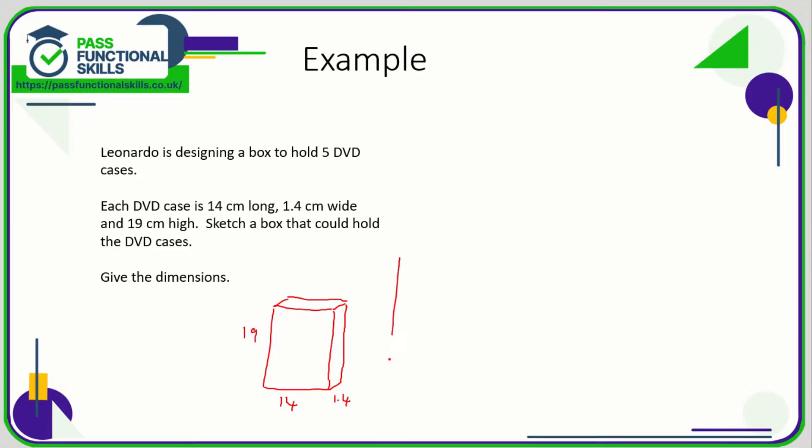So what we need to do is find a box which will fit one, two, three, four, five DVDs in it. So presumably we are going to be stacking them sort of height ways, so this is going to be 1.4, 1.4, 1.4, 1.4, 1.4, and it needs to fit in a height of 19 and it's also going to need a depth of 14 as well.